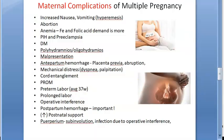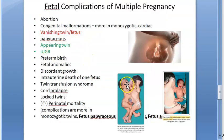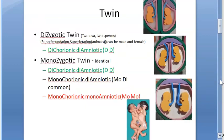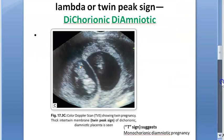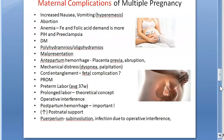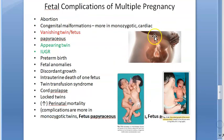In the next video we will look at the fetal complications of multiple pregnancy. So far we have looked at multiple pregnancies: the Hellin's rule, the types of twins, why twins happen, and now the maternal complications of multiple pregnancy.